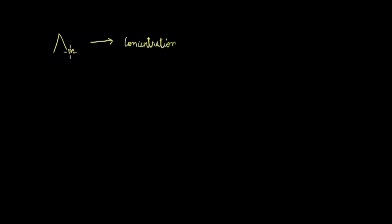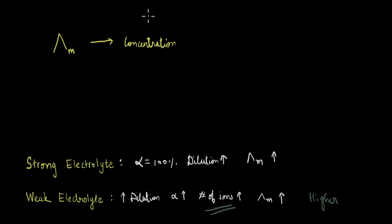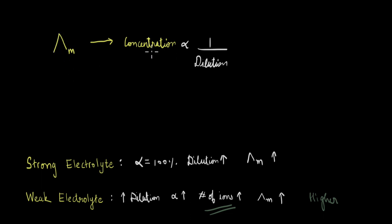In an earlier video, we looked at molar conductivity represented by lambda m and we saw how it varies with concentration. In this video, we want to plot this variation on a graph and try to graphically understand how molar conductivity varies with concentration. Before we go to graph this, let me give you a quick recap. Decreasing the concentration is the same as increasing the dilution, and molar conductivity can be thought of as basically the conductivity of one mole of an electrolyte. How molar conductivity varies with concentration or dilution depends on the type of the electrolyte as well.